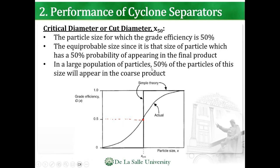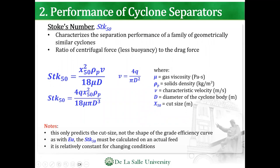In a large population of particles, 50% of the particles of this size will appear in the coarse product. For performance, the Stokes number characterizes the separation performance of a family of geometrically similar cyclones — it's the ratio of centrifugal force to drag force. The formula uses cut size X₅₀ squared, density of the particle, and velocity over 18μ times the diameter of the cyclone. Since velocity is 4Q over πD squared, you can incorporate that to relate Stokes number and diameter directly.